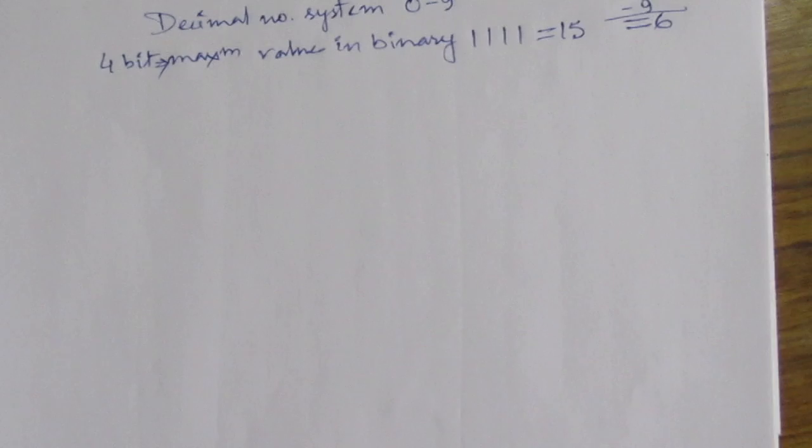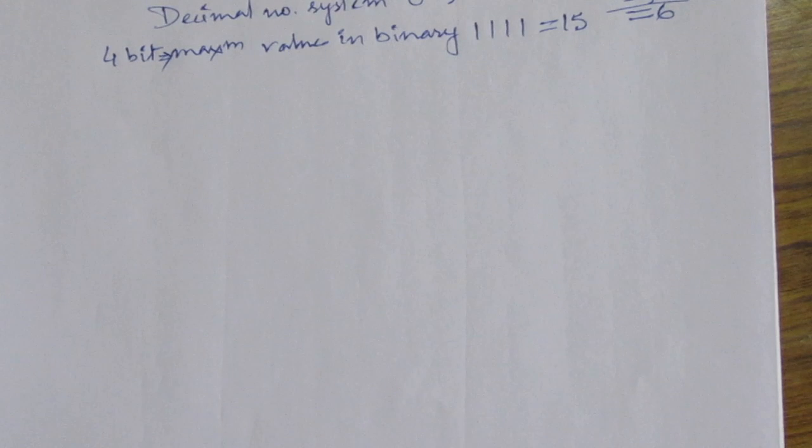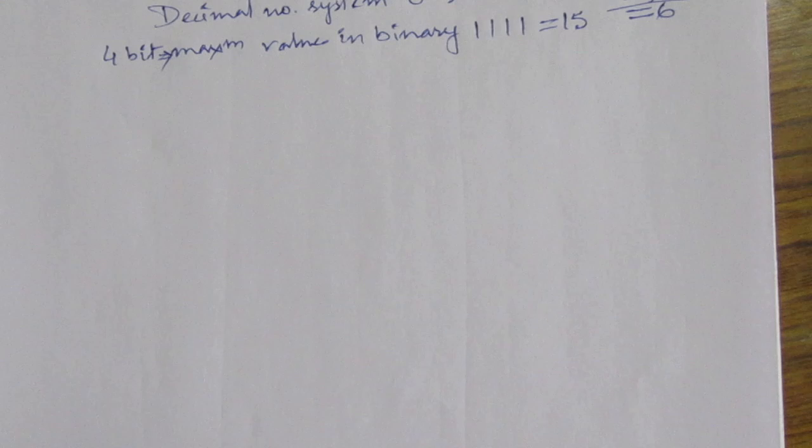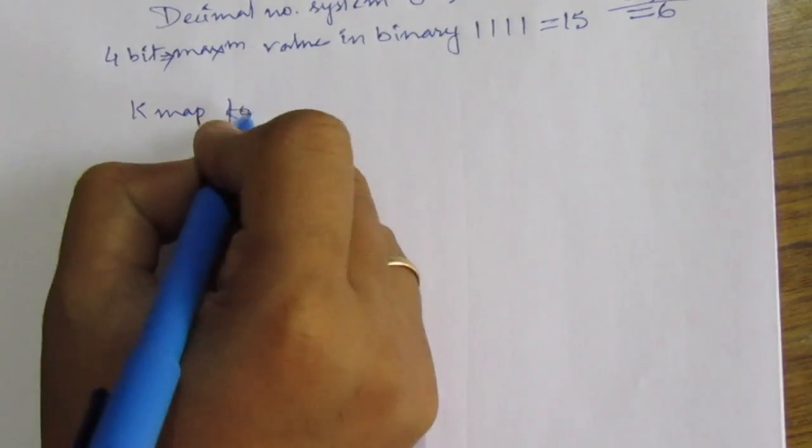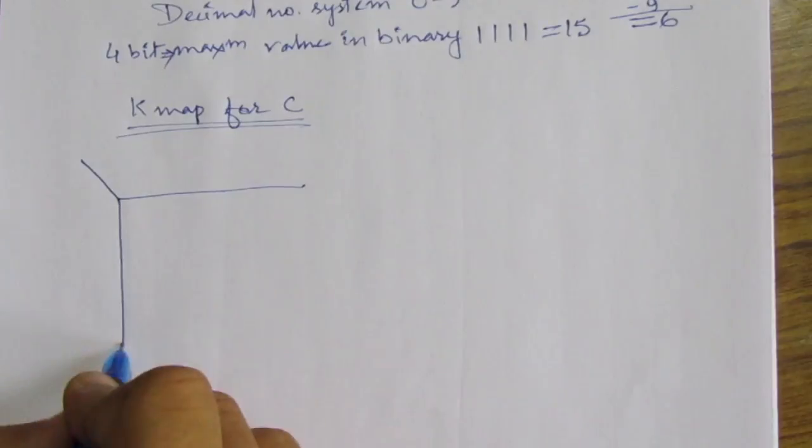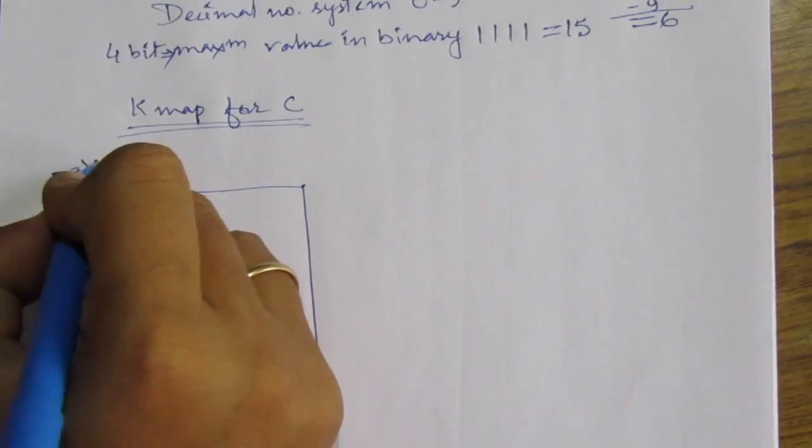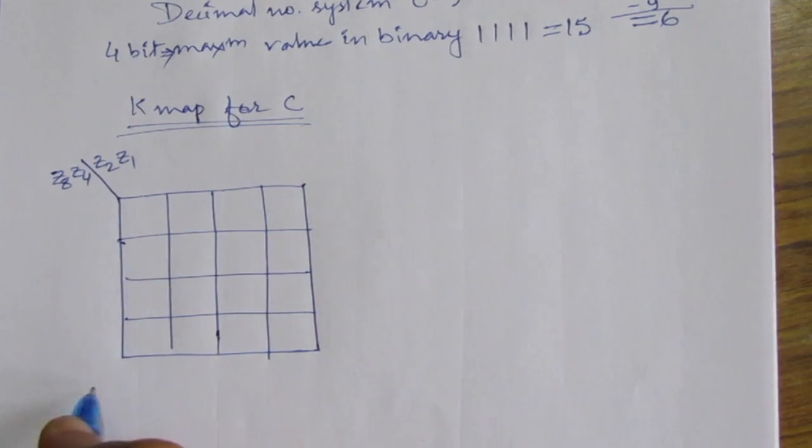Now we will make the K-map for the c term, which means carry. We need to find a boolean expression for the carry in the BCD. So what we have to do is make the K-map for the carry.